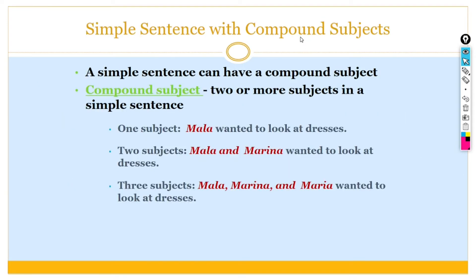Simple sentence with a compound subject. Compound subject: two or more subjects in a simple sentence. One subject, Mala wanted to look at the dress. So here is one subject in this example. Mala and Marina wanted to look at dresses, there are two subjects.